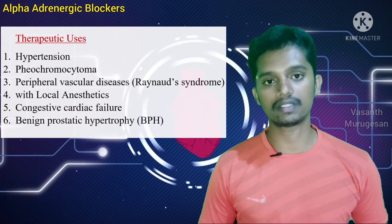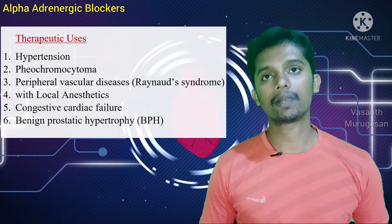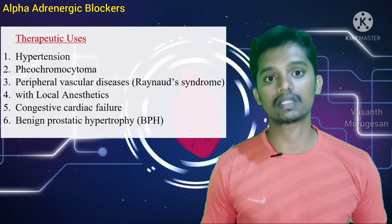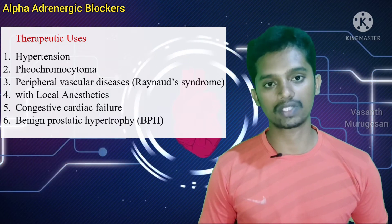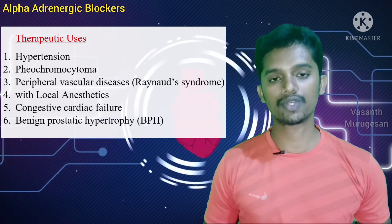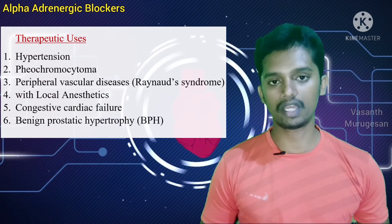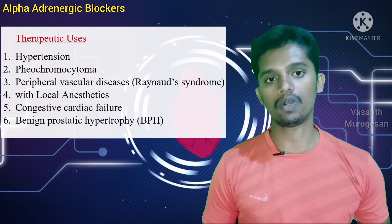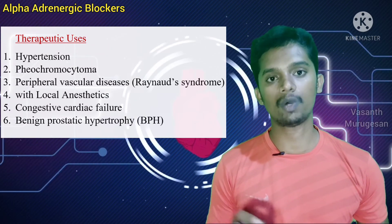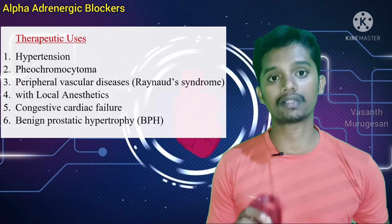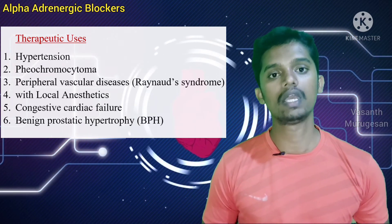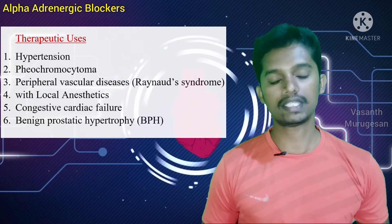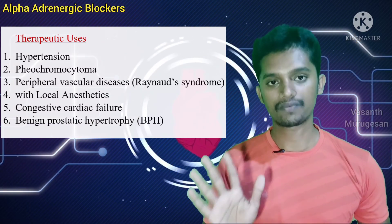The third use is peripheral vascular disease, for example Raynaud's Syndrome. Alpha blockers provide symptomatic relief in this disorder. The fourth use is congestive cardiac failure (CHF or CCF), where Alpha 1 blockers are used for their vasodilator action in managing this condition.